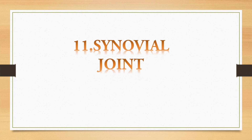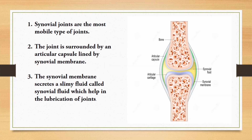The final question: synovial joint. Synovial joints are the most mobile type of joints. The joint is surrounded by an articular capsule lined by synovial membrane. The synovial membrane secretes a slimy fluid called synovial fluid which helps in the lubrication of joints. In this diagram, you can clearly see a synovial joint which is lined by a synovial membrane and having synovial fluid.